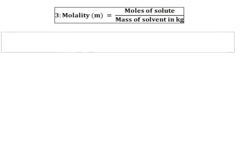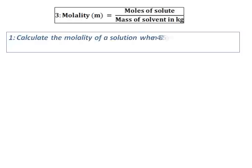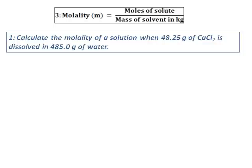We will do a question on molality now. Calculate the molality of solution when 48.25 grams of calcium chloride is dissolved in 485 grams of water. As we know from the definition of molality, molality is moles of solute divided by mass of solvent in kilograms.